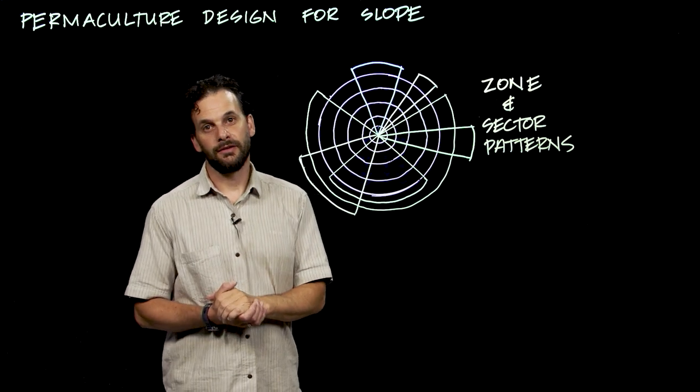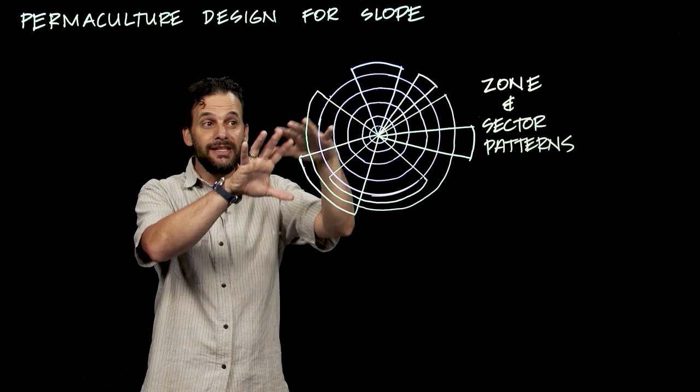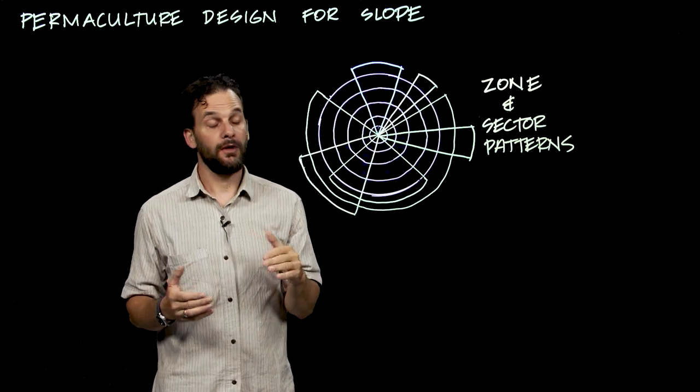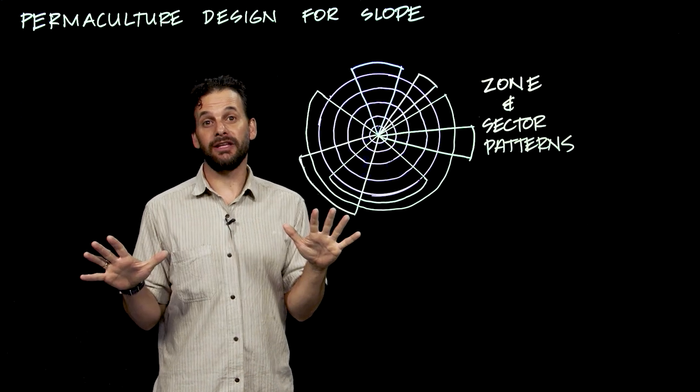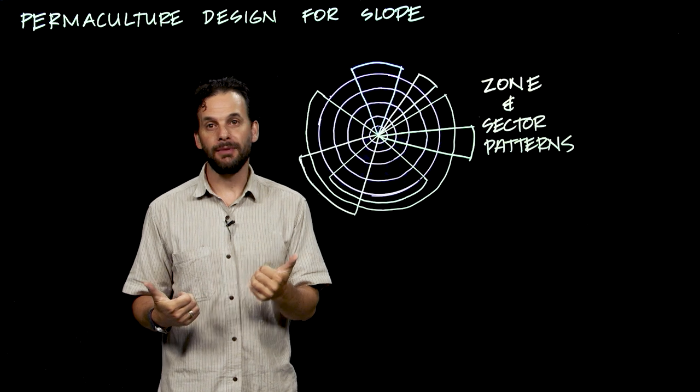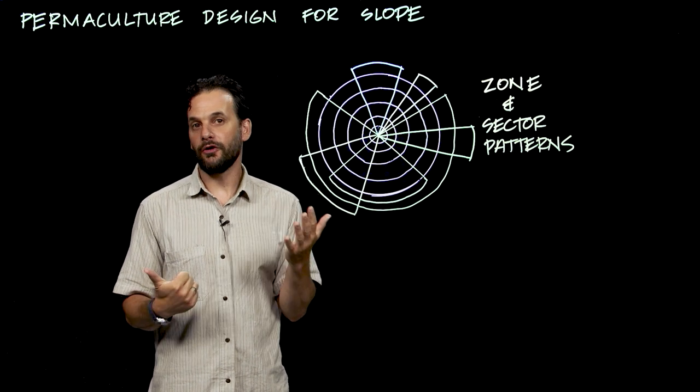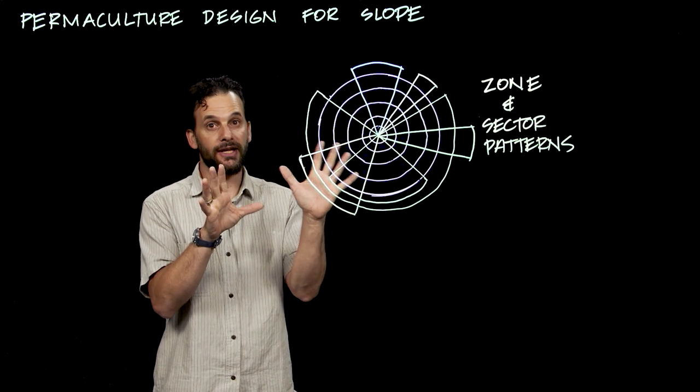But the fact is that hardly any sites are actually so regular that these geometric templates fit neatly over them. The truth is that the topography of the Earth is infinitely varied, and each site has unique variations of climate, microclimate, soil, aspect, slope, water flow, hydrology, wind direction, et cetera. Each site is unique.